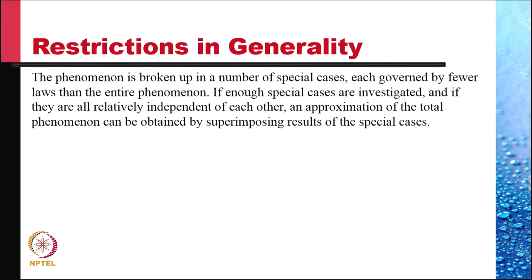Instead, we can try to circumvent the most troubling law by any one of the methods that we discuss today. The first strategy is to restrict the generality of applications. The phenomena is broken up in a number of special cases, each governed by fewer laws than the entire phenomenon. If enough special cases are investigated and if they are all relatively independent of each other, an approximation of the total phenomenon can be obtained by superimposing results of these special cases.